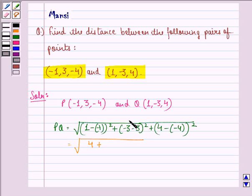We see that (-3) minus 3 is (-6), and square of (-6) is 36, plus (4 minus (-4), that is 4 plus 4 is 8, and square of 8 is 64). So we add 64 here.